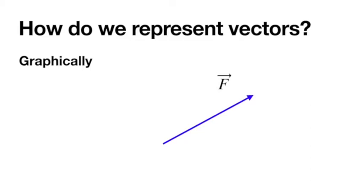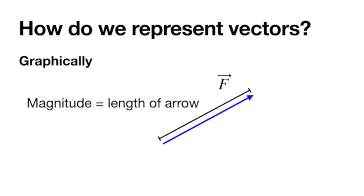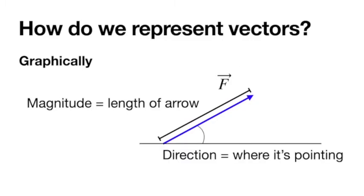Here's some force. A force — we know what a force is: you push something, you pull something, you apply a force to it. It has a direction — I can push something left, push something right. If I wanted to double the strength of the force, I would represent that by making this arrow twice as long. If I wanted to push it in the other direction, I'd put the arrow pointing the opposite way. Magnitude is the length, direction is where it's pointing.